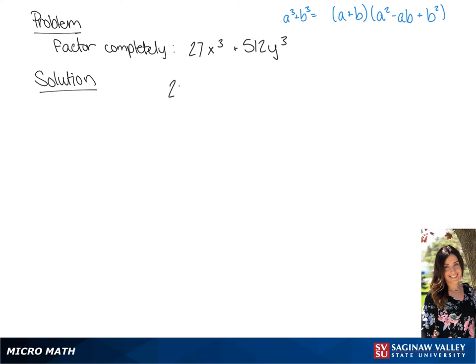We're going to factor 27x cubed plus 512y cubed. We're going to find the a and b terms. To find the a term, we're going to take the cube root of 27x cubed. We will get 3x.